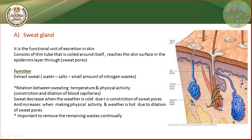Now, what about the sweat gland? Here we have a diagram showing the sweat glands and how they are connected to the sweat pores at the surface of the skin. The sweat gland is the functional unit of excretion in the skin. It consists of a coiled tube that coils around itself and reaches the skin surface through the epidermis, opening through the sweat pores.